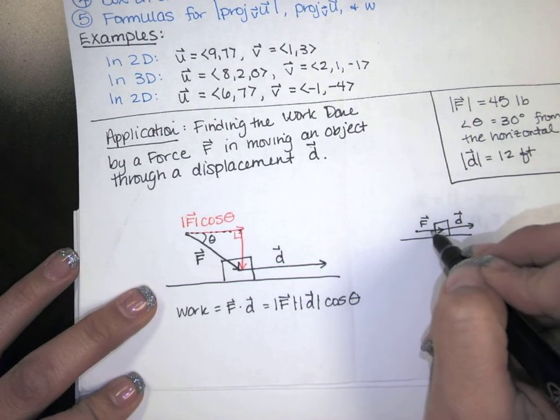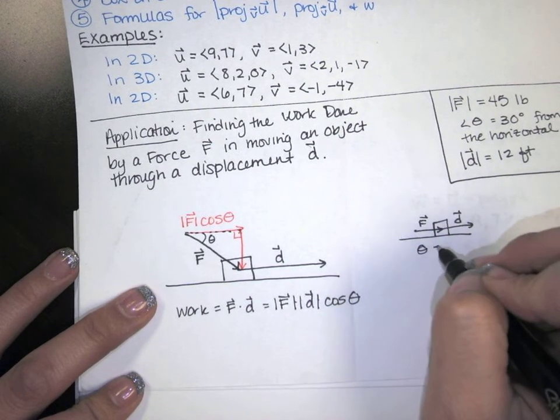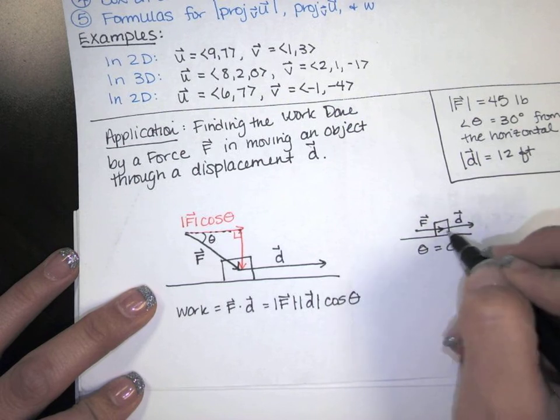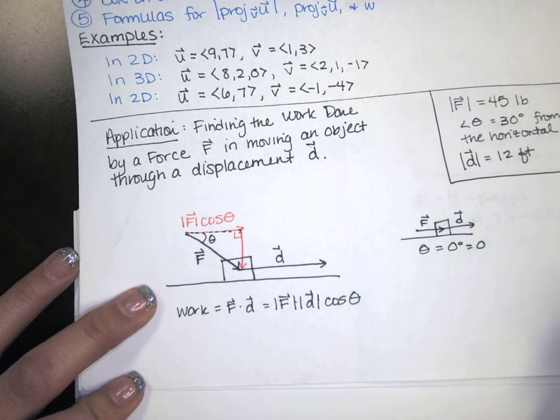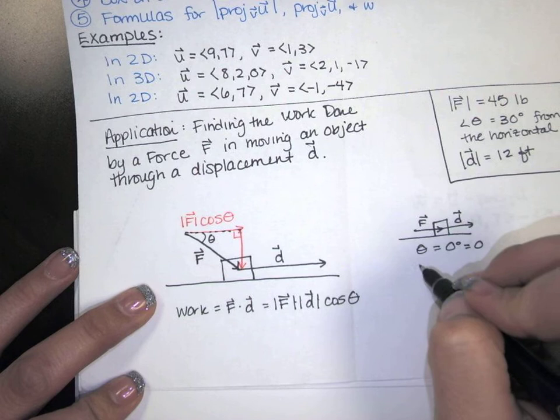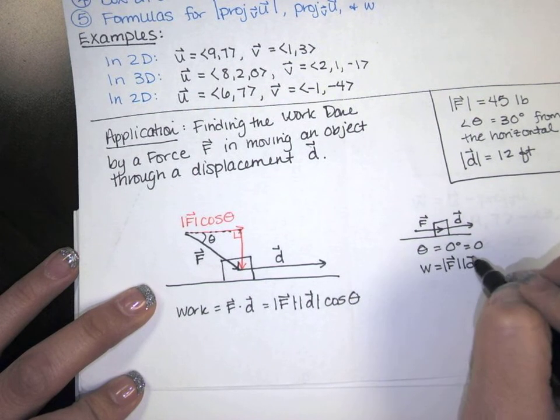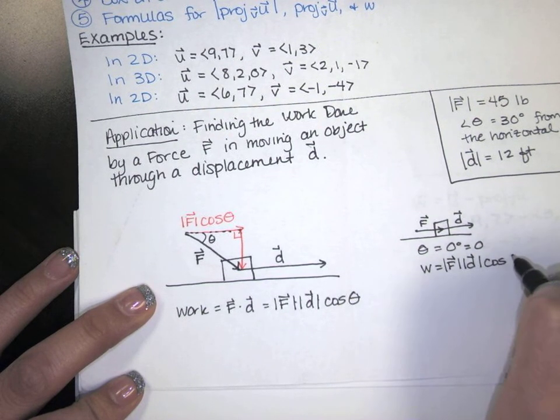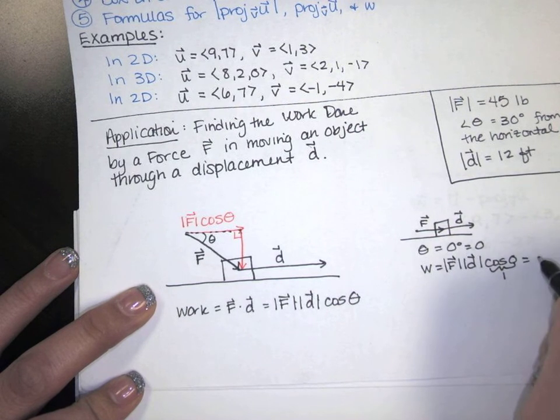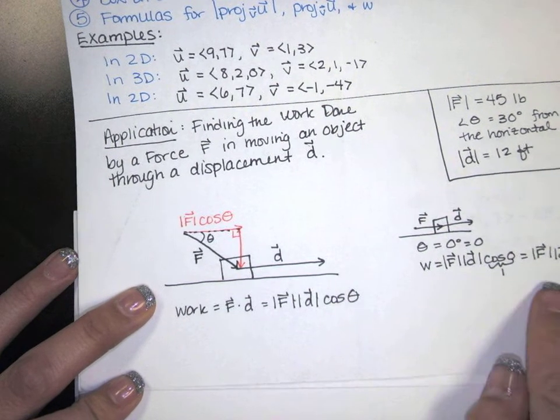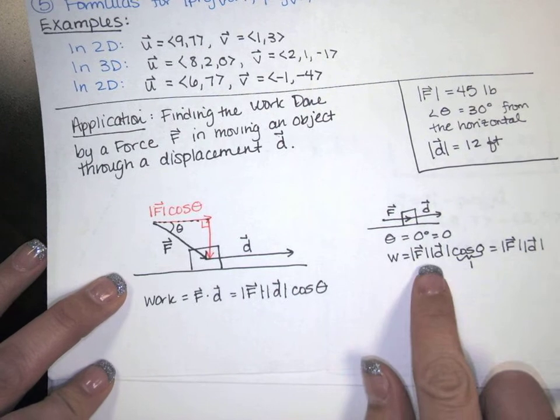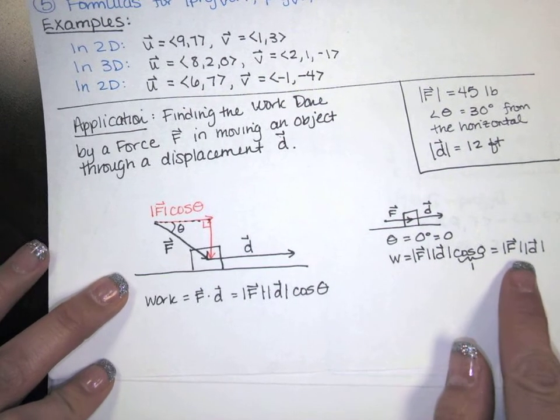Well, in this case, notice the angle between the force and the displacement vectors are zero degrees or zero radians. There is no angle between those two displacements. So in that case, the work is the magnitude of the force times the magnitude of the displacement times the cosine of zero, which is one. So all of my force is contributing to the work done. The whole thing is actually moving it from here to here.